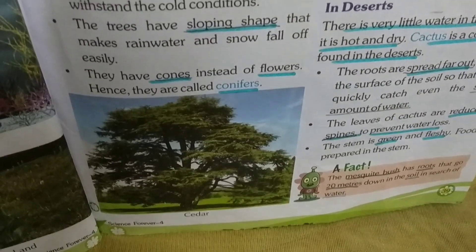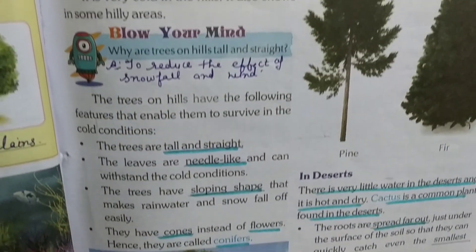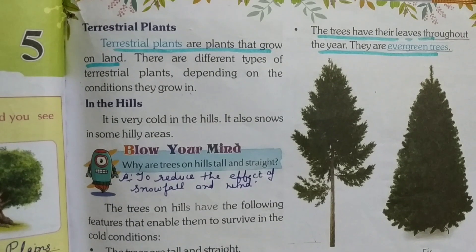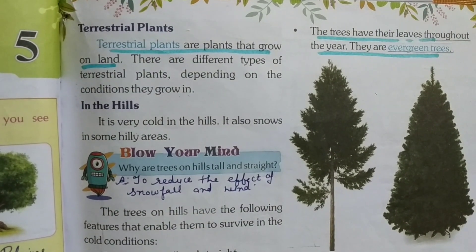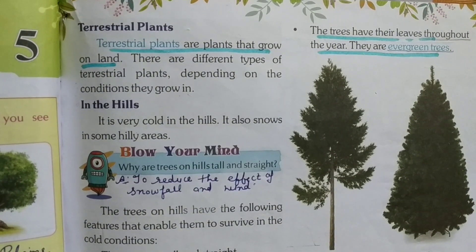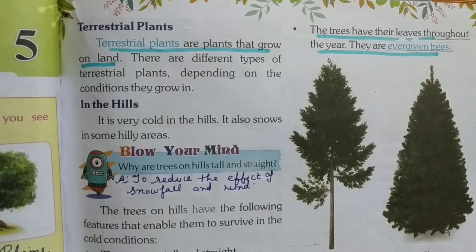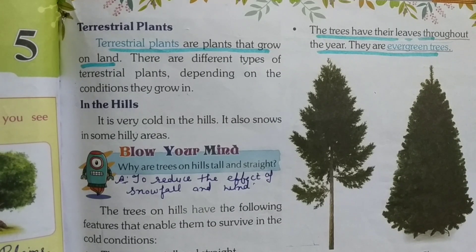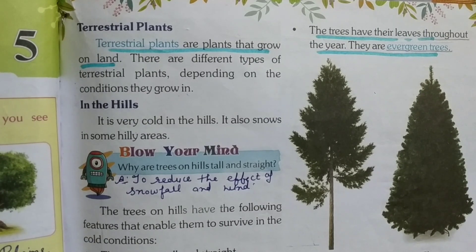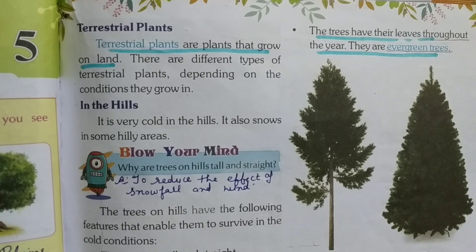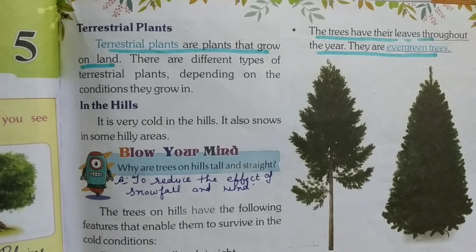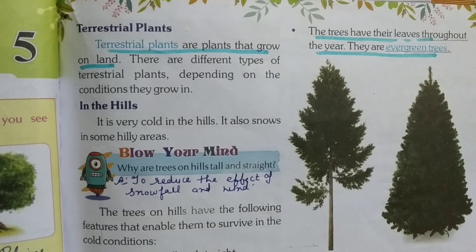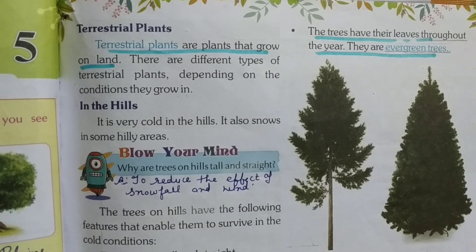Plants can be classified into two groups. Number 1: Terrestrial plants — they are grown on land. Number 2: Aquatic plants — they grow in water. There are different types of terrestrial plants depending on the conditions they are growing in.